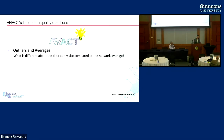One is simply about sites compared to other sites — how does my site compare to the network average? Do I have 4% of my patients with diabetes, but on average 25% of site patients have diabetes? That could be something wrong with my data, or something different about my patient population. But it is something that does warrant some investigation.